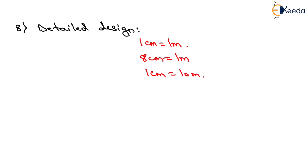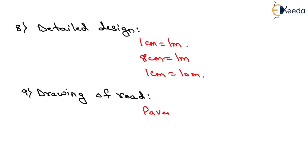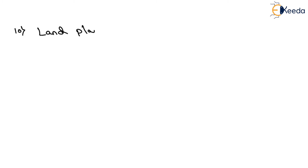The next parameter is Drawing of Road. Drawing of Road intersection should be prepared showing all the details of pavement, shoulders, islands, etc., to scale. The next parameter is Land Plan for Queries. Where queries for construction material are to be acquired for new projects, a separate land plan should be prepared. The size of these maps and scales may be similar to those suggested under Land Acquisition.